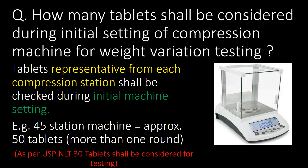How many tablets shall be considered during initial setting of a compression machine for weight variation testing? Tablets representative from each compression station shall be considered. For example, if the compression machine has 45 stations, approximately 50 tablets — more than one round — shall be considered for initial weight variation testing. As per USP, not less than 30 tablets shall be considered for testing.